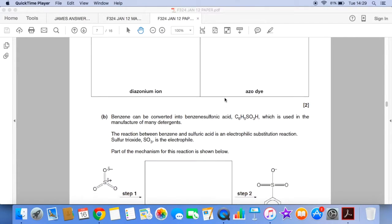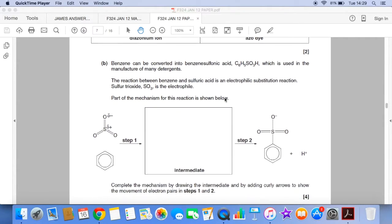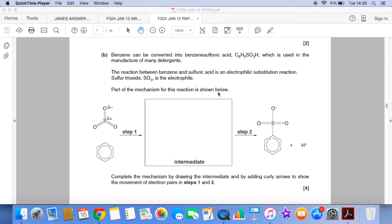Next part of the question is testing your knowledge of the mechanism of electrophilic substitution, but it's choosing an electrophile that we're not familiar with, SO3. So they've drawn it out here and they're expecting you to be able to apply your knowledge of the nitration mechanism or the halogenation mechanism and can you apply it to this unfamiliar scenario.